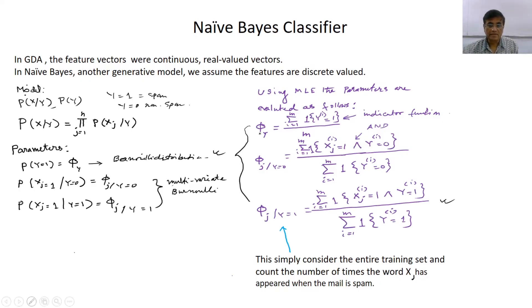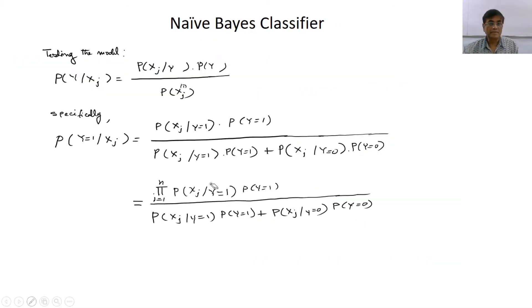So you see, once you get this in terms of sample, it is extremely easy to calculate and that is why people love Naive Bayes classifier. So this is the training phase.